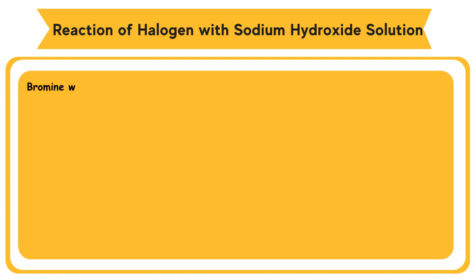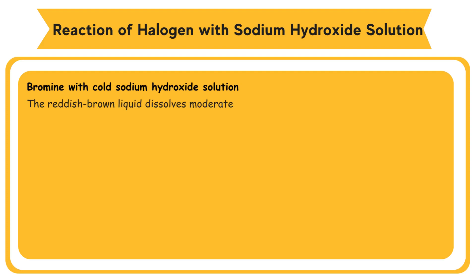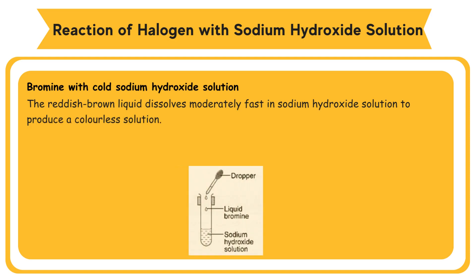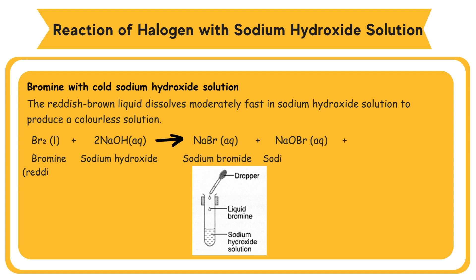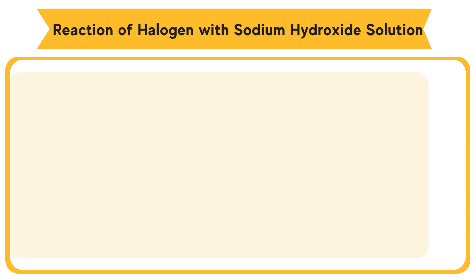For bromine with cold sodium hydroxide solution: the reddish-brown liquid dissolves moderately fast in sodium hydroxide solution to produce a colorless solution. Bromine reacts with sodium hydroxide to form sodium bromide, sodium bromate(I), and water. Sodium bromate(I) (NaOBr) is also known as sodium hypobromite.